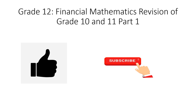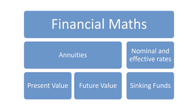In Grade 12 financial maths you need to do annuities, and there are two types: present value and future value annuities. In Grade 11 you learned nominal and effective rates, but these are also applicable in Grade 12, and then of course sinking funds.